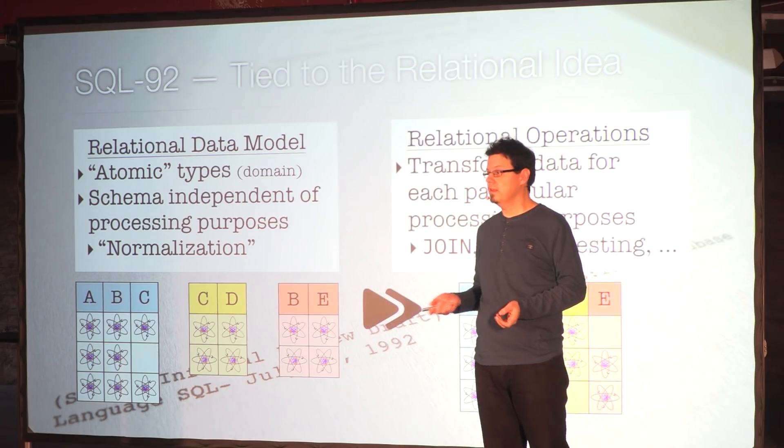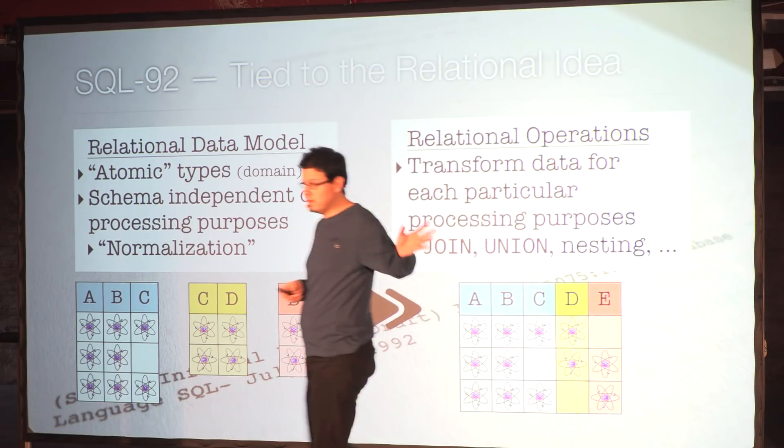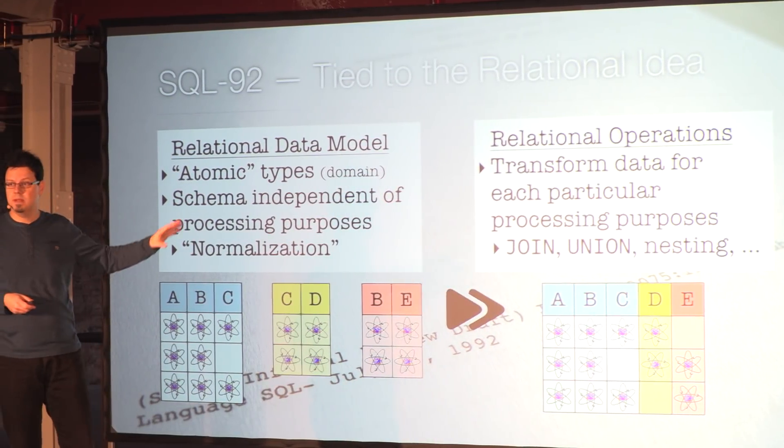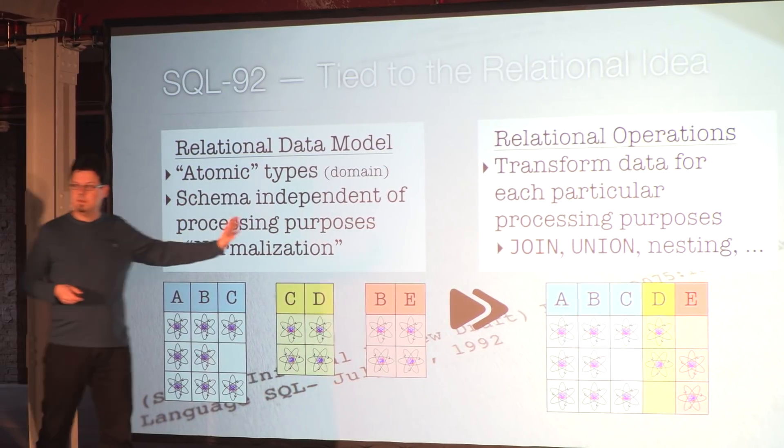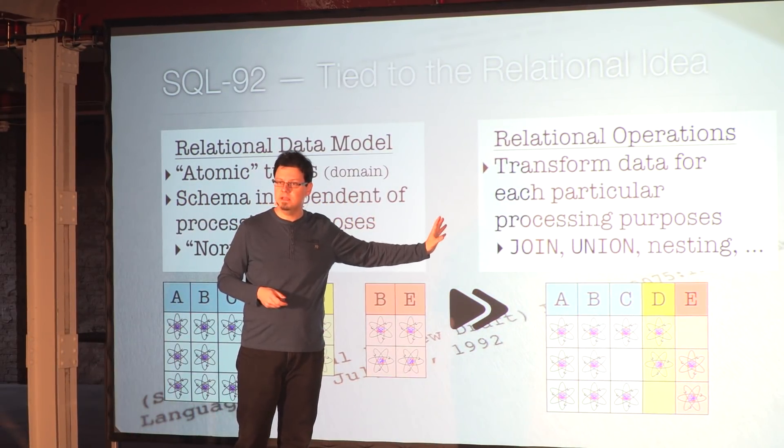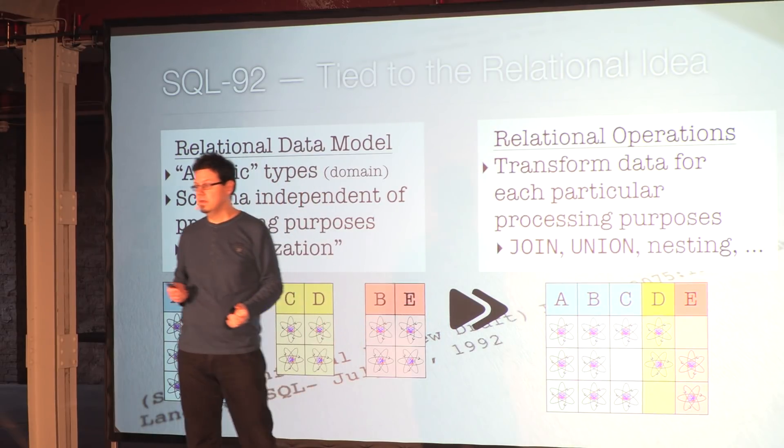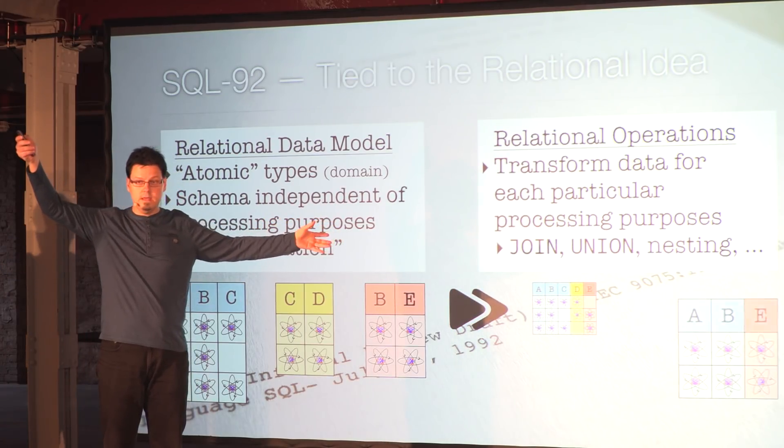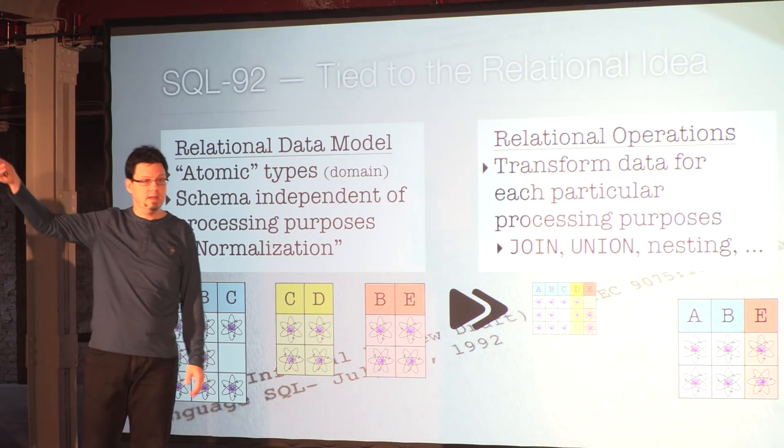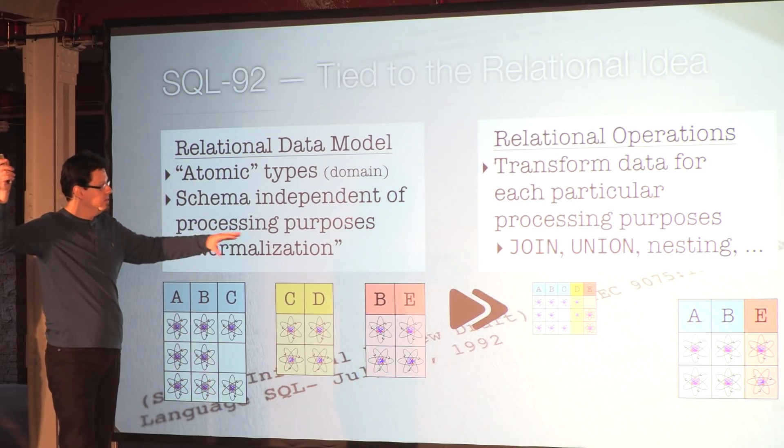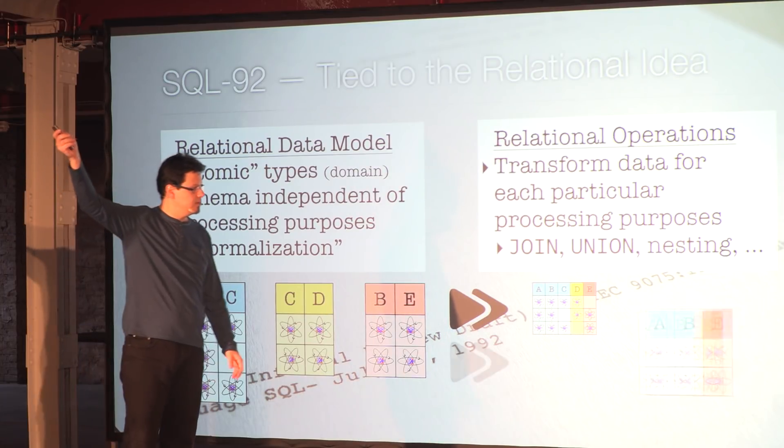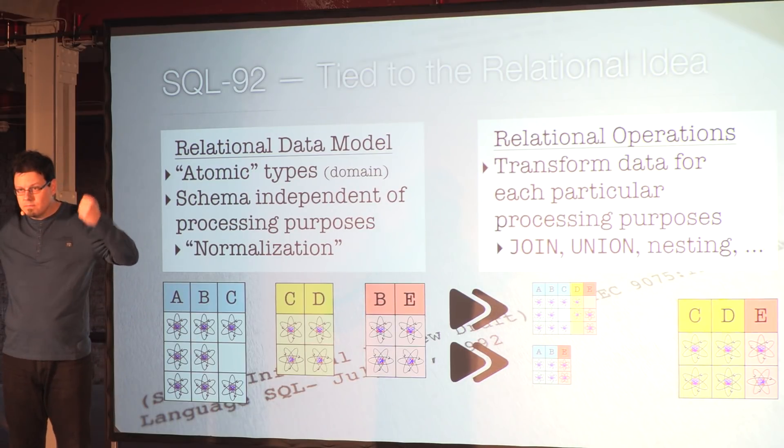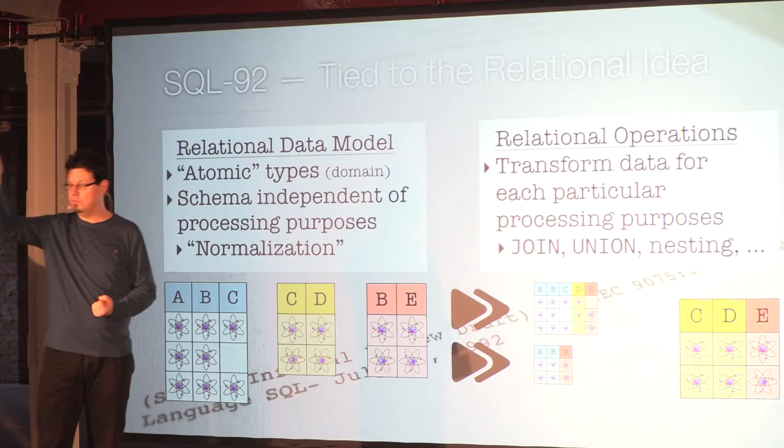Therefore, we have the second part of the relational idea, which is the relational operations. These are transformation steps which help you to transform the normalized, persistent data into something that is more suitable to process in your client application for each different business need. So if you have one business case, then you might transform it in one way using the relational operations like join, union, and so on. If you have the next business requirement, you just transform it differently. This is the important idea of what SQL is actually, the key idea behind SQL was to do these transformations.